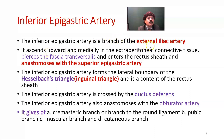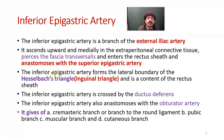The inferior epigastric artery is a branch of the external iliac artery. It ascends upward and medially in the extraperitoneal connective tissue, pierces the fascia transversalis, and enters the rectus sheath where it anastomoses with the superior epigastric artery. The inferior epigastric artery forms the lateral boundary of Hesselbach's triangle, also called the inguinal triangle. This artery is medial to the deep inguinal ring, and it is a content of the rectus sheath.